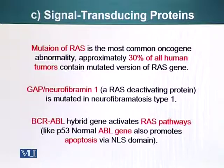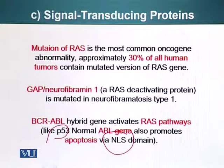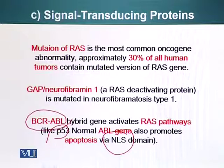BCR-ABL hybrid genes — remember, we talked about CML. These hybrid genes activate the RAS pathway like normal signaling. The ABL gene product also promotes apoptosis via its NLS domain, its nuclear localization signal domain. However, the fusion gene that occurs in CML, chronic myelogenous leukemia, prevents cells from undergoing apoptosis and also results in uncontrolled cell division.